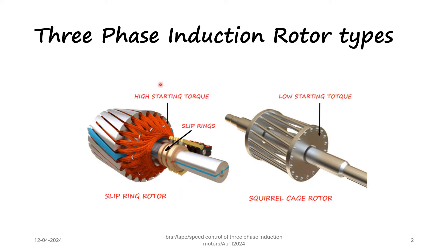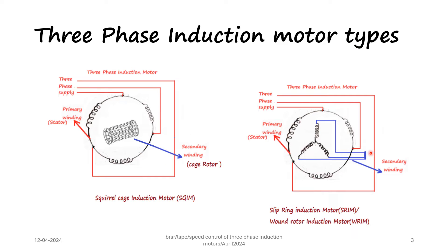In both cases the stator contains a three phase winding. The stator is shown as star connected and the three phase supply is given to the stator. The squirrel cage rotor is a completely closed structure. In the slip ring induction motor, the rotor has a three phase winding which is usually star connected; the three ends are taken out and externally shorted. This makes it possible to make external connections to the rotor for speed control, whereas it is not possible with the squirrel cage induction motor.